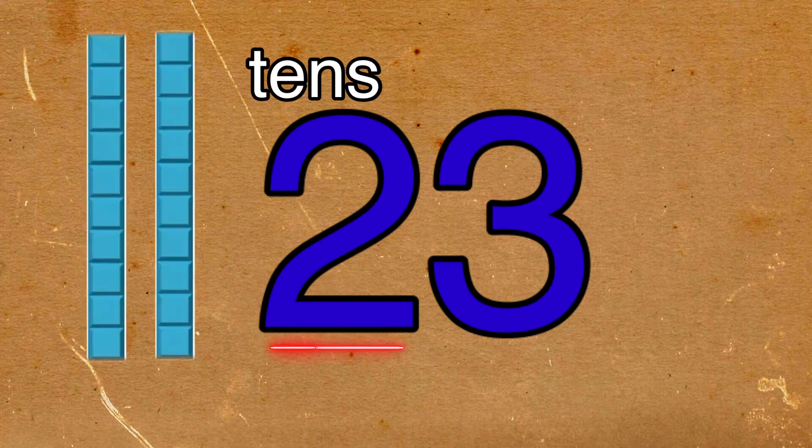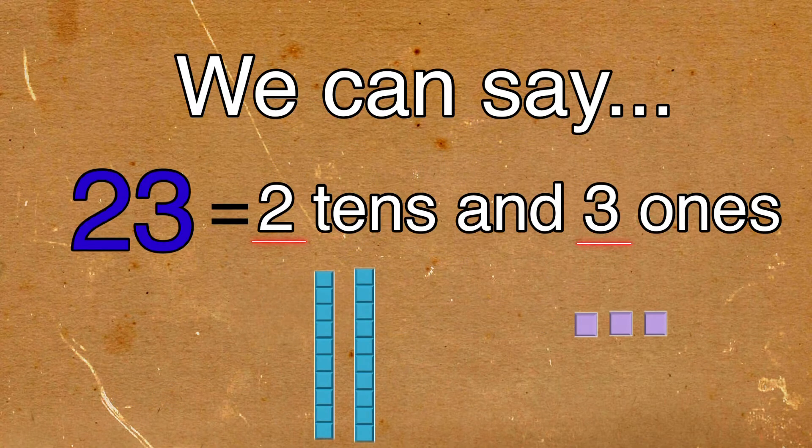On the other hand, 2 is in the tens place. We can represent it by showing two rods. We can say 23 is equal to two tens and three ones.